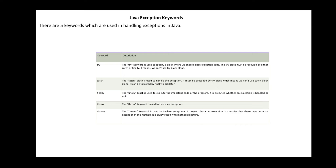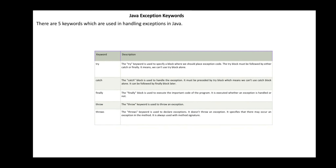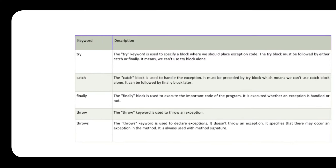Now we will look at the different keywords used in Java exception handling, one by one. When you want to stop an abnormal or infinity error, simple techniques alone are not enough. The exception handling mechanism defines five different keywords: try, catch, finally, throw, and throws.